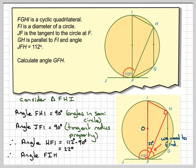And then angle FIH, the remaining angle in this triangle, is going to be 180 minus 90 minus 22, angles in a triangle, which is 68 degrees. So we've got some information about this triangle, we've got all the angles now.